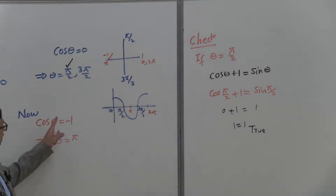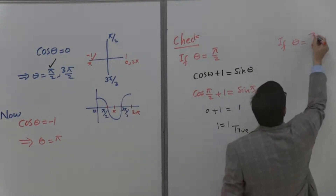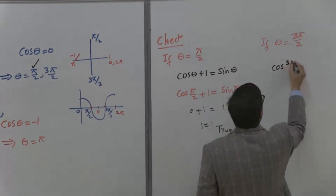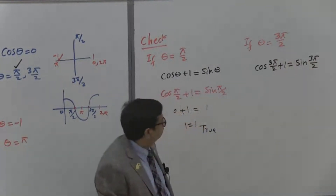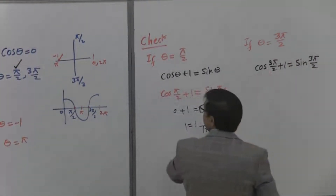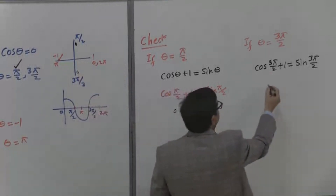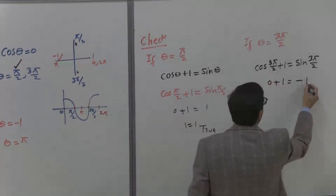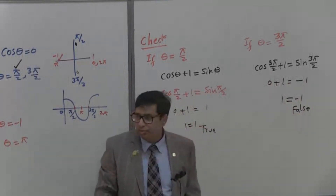Similarly, we check for the second value, theta equals 3 pi over 2. Substituting into the same equation: cosine(3π/2) plus 1 equals sine(3π/2). Cosine of 3 pi over 2 is 0, so this gives 0 plus 1 equals negative 1, that is 1 equals negative 1, which is false. So 3 pi over 2 cannot be a solution of the equation.